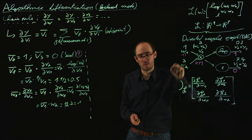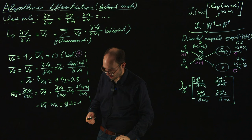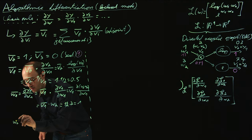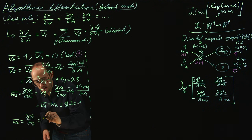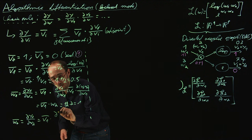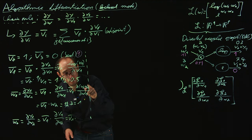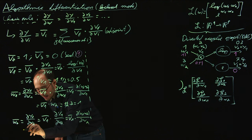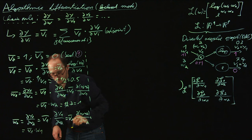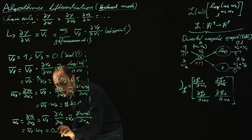So that is the adjoint, or more specifically the partial derivative of the first output with respect to the first input. We can do the same for the second input: w2 bar is the sensitivity of the first output with respect to w2, which is v1 bar times the partial derivative of v1 with respect to w2. Since v1 = w1·w2, that partial derivative is w1, giving v1 bar times w1. v1 bar was 0.5 and the primal of w1 was 1, so the adjoint here is 0.5.